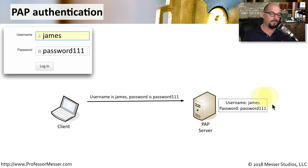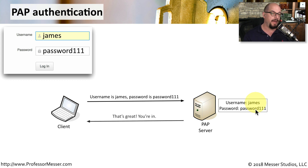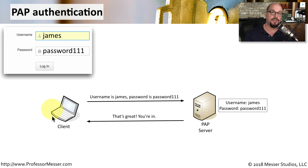The PAP server contains a database that also contains the username and the password, and it checks to see if those two things match. If they match, the client receives a message back saying the authentication was successful, and you've now gained access to the network.